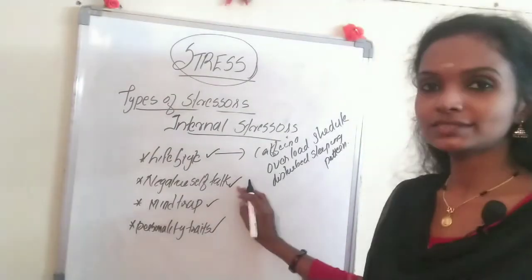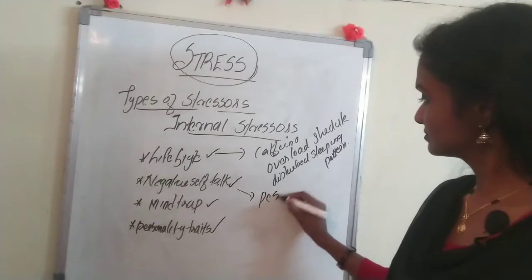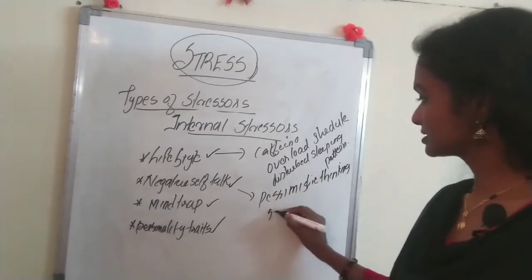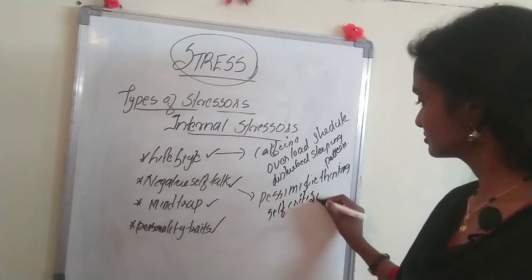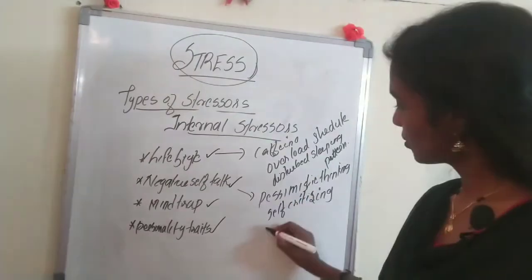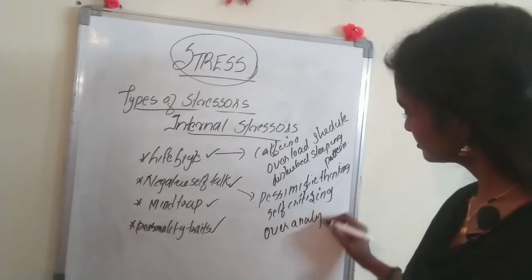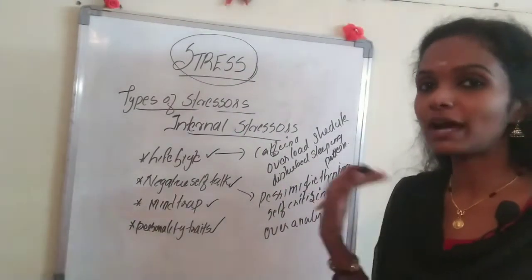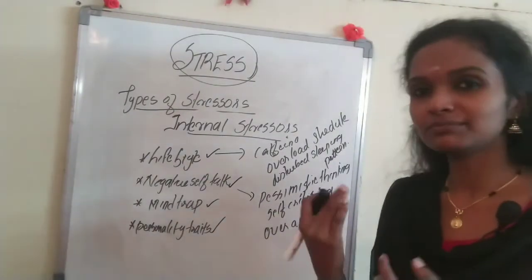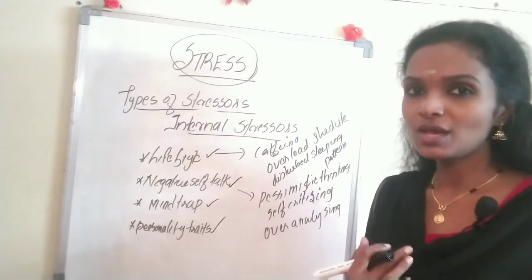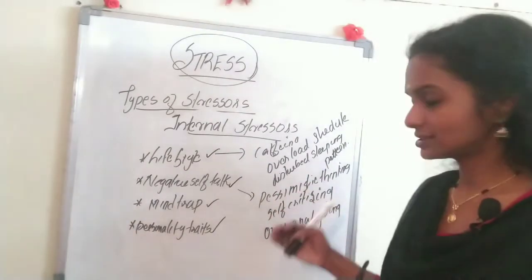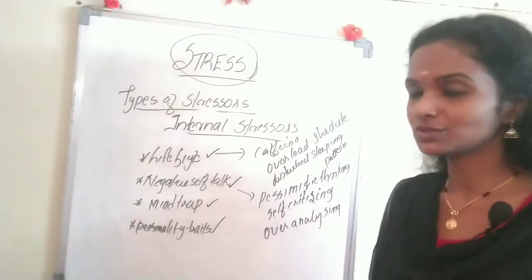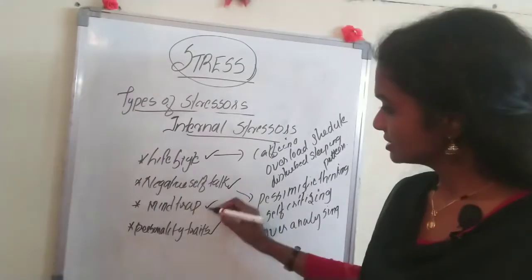Examples for negative self-talk include pessimistic thinking, self-criticizing, and over-analyzing. Pessimistic thinking means always thinking that something bad will happen. Self-criticizing includes thoughts like 'I am bad' or 'I am not looking good.' Over-analyzing and over-judgment towards others or yourself also creates stress for a person.